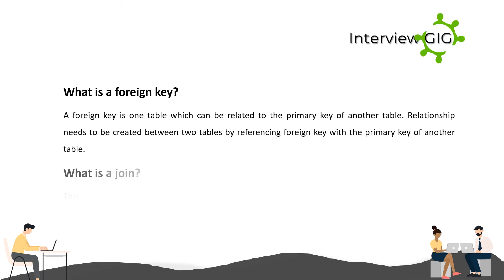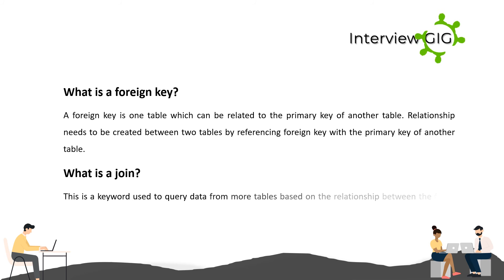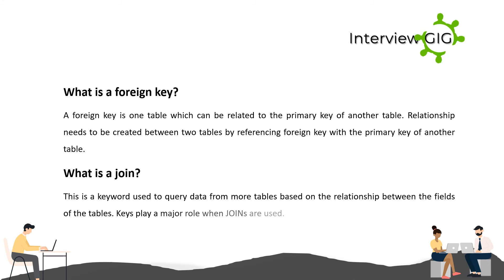What is a JOIN? A JOIN is a keyword used to query data from more tables based on the relationship between the fields of the tables. Keys play a major role when joins are used.